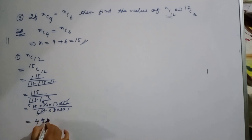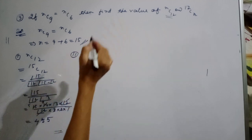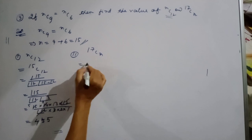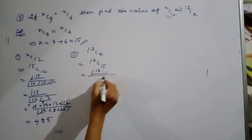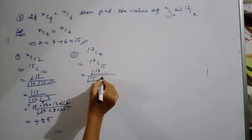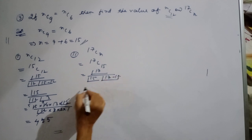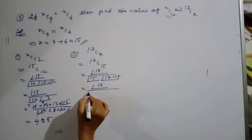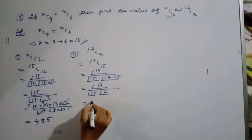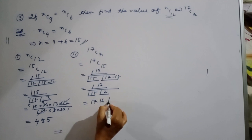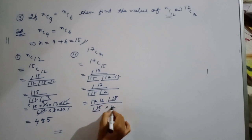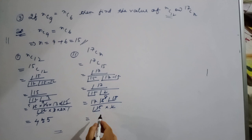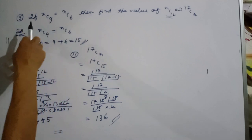Also find 17Cn, which is 17C15. The answer is 136. We are now moving to question number 4.